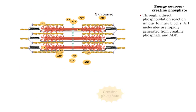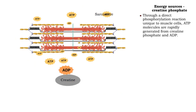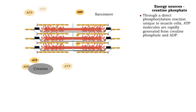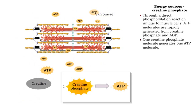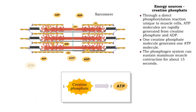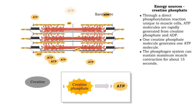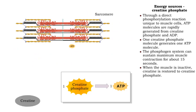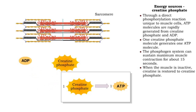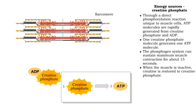In a process that is unique to muscle cells, creatine phosphate donates its phosphate to convert ADP to ATP. One creatine phosphate molecule generates one ATP molecule. The phosphagen system can generate enough ATP to sustain maximum muscle contraction for about 15 seconds. During periods of muscle inactivity, creatine is again phosphorylated, and the muscle's creatine phosphate stores are replenished. The muscle is now ready for another burst of activity.